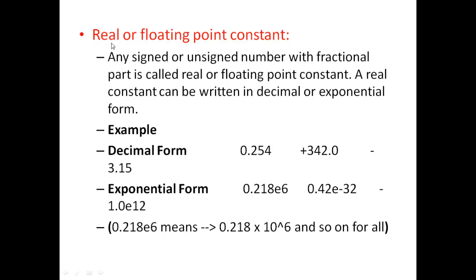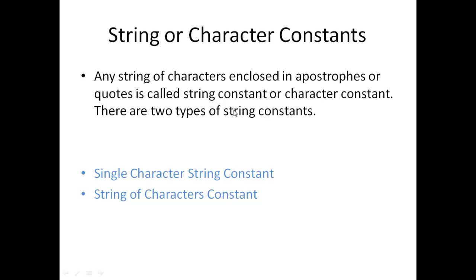Similarly, the second type of constant in Numeric Constants category is real or floating point constant. Real or floating point constant can be either in decimal form or an exponential form.